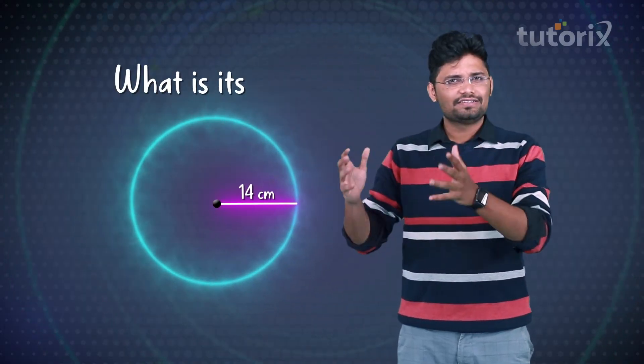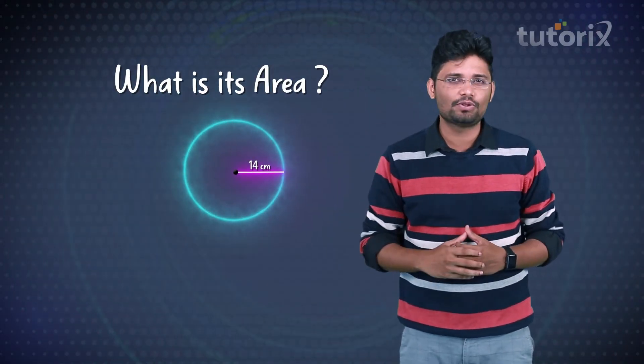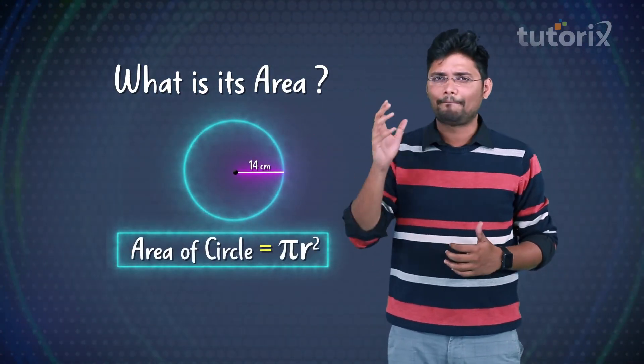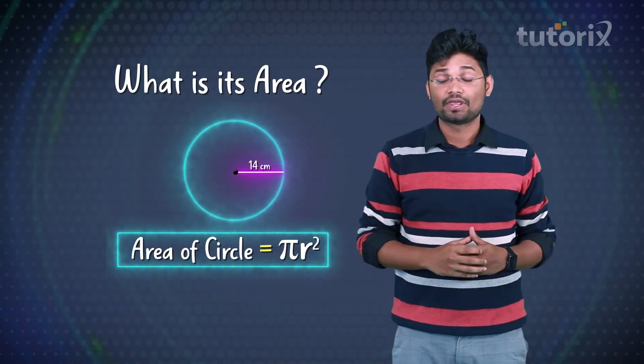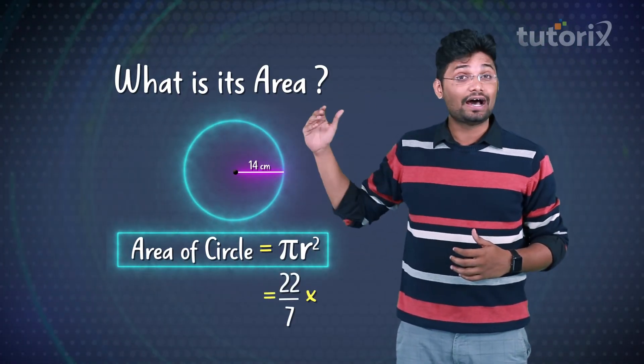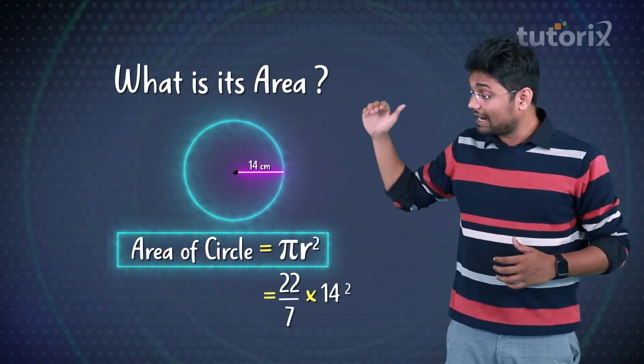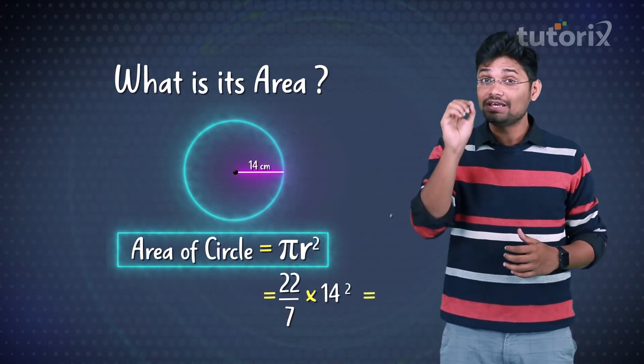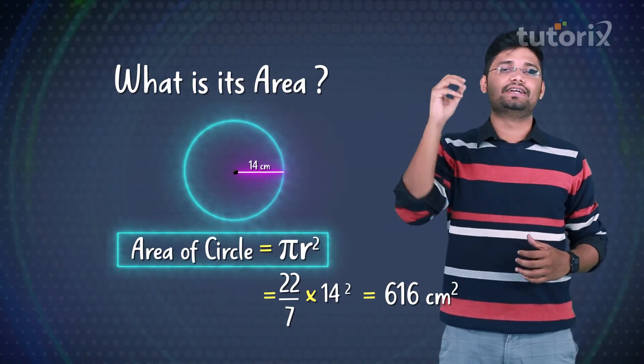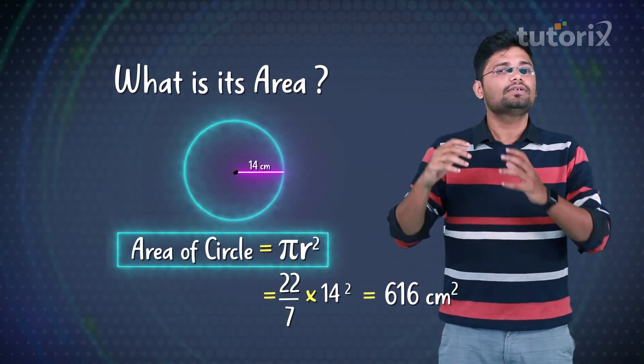Now, if the radius of a circle is 14 centimeters, what is its area? Simply substitute the values in the formula. Area is equal to πr², where Pi is 22 by 7 and r² will be 14 squared because r is 14. After simplification, this value comes out to be 616 square centimeters. So the area of this circle will be 616 square centimeters.